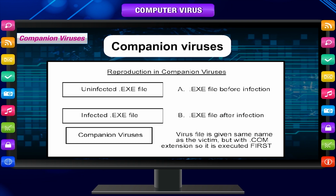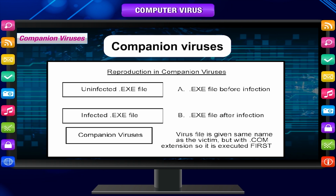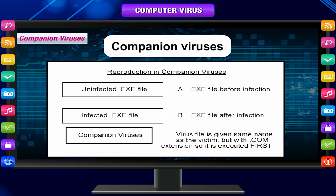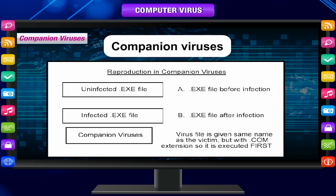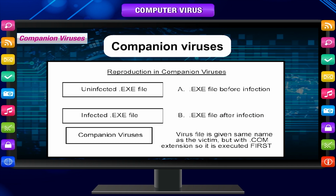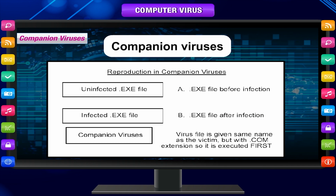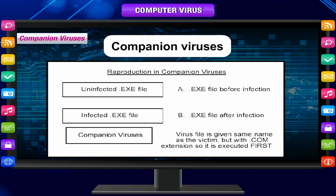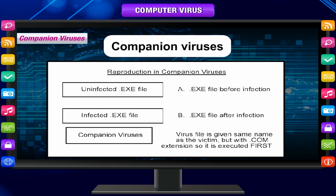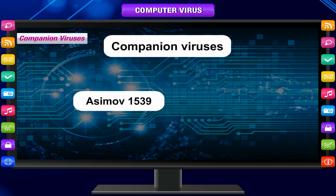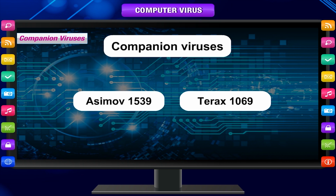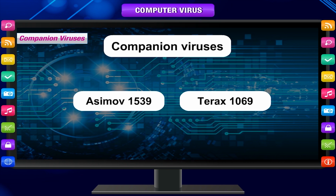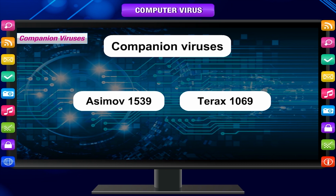Companion viruses are similar to direct action types or resident types. They are called companion viruses because sometimes they get into the method and accompany other existing files. Examples of companion viruses are Asimov 1539 and T-Rex 1069.